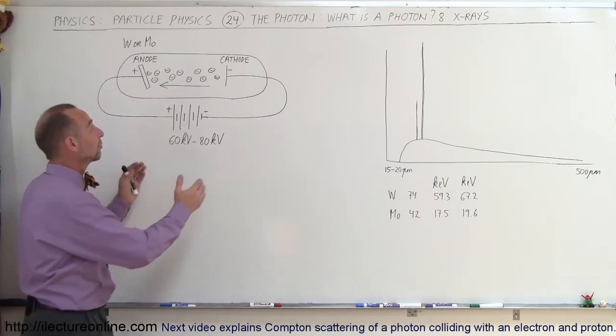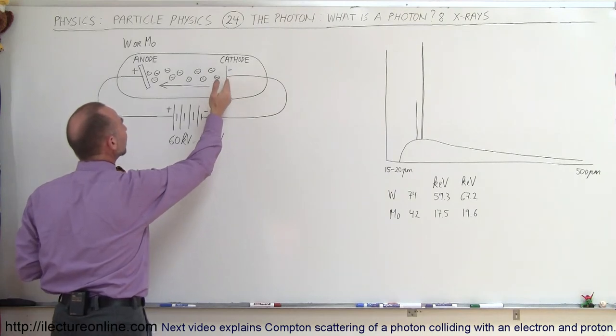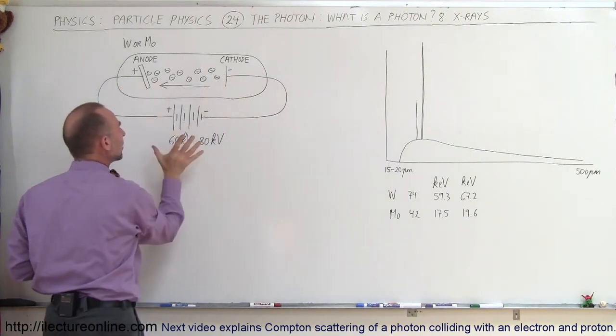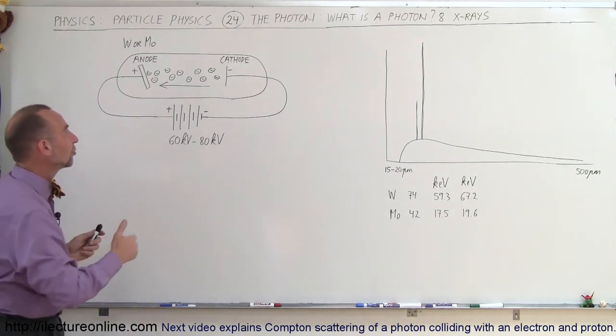Well, what we do is we take, for example, a tube like this, we evacuate it, and we send electrons across at very high speeds from the cathode to the anode. We apply a very strong potential difference to give them a very hard, large acceleration.